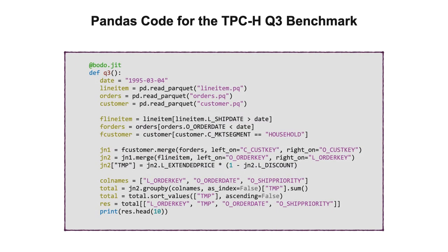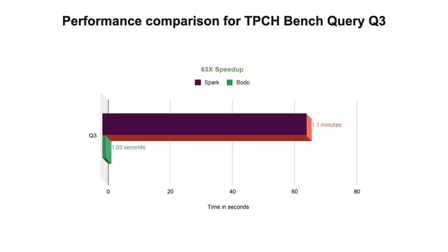Here's another example using Bodo, but this time it deals with processing tabular data. Data scientists often write tabular data processing code in Pandas, but big data systems usually require SQL or DataFrame-like code. Bodo supports Pandas code and outperforms SQL systems significantly. Even though Spark is highly optimized for these use cases, compute time for Bodo was 63 times faster than Spark for this example on a four-node AWS cluster using a 100-gigabyte dataset.